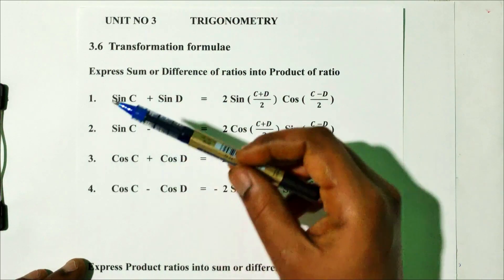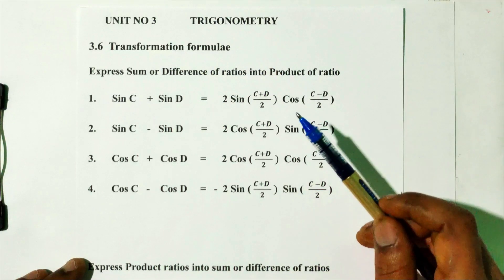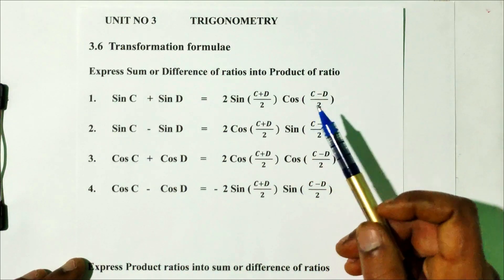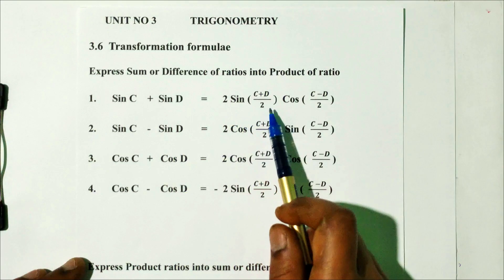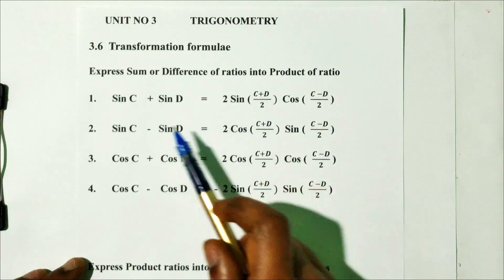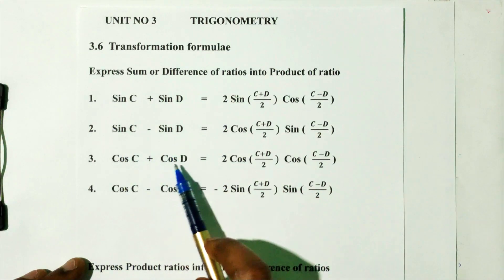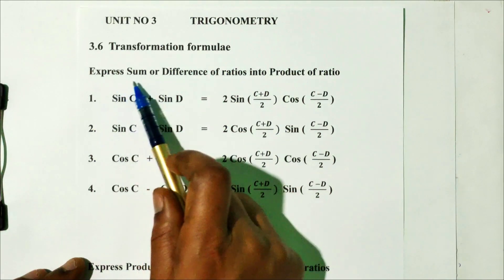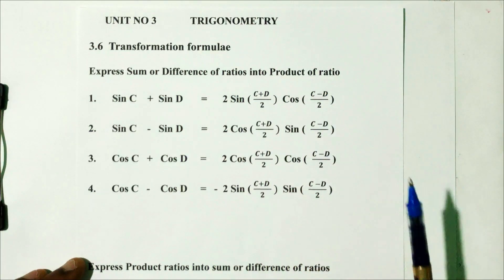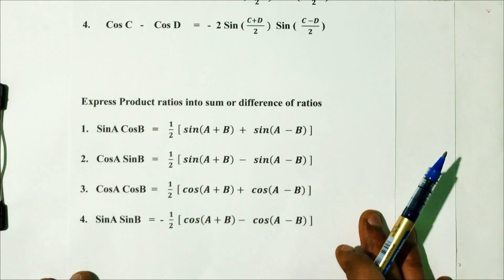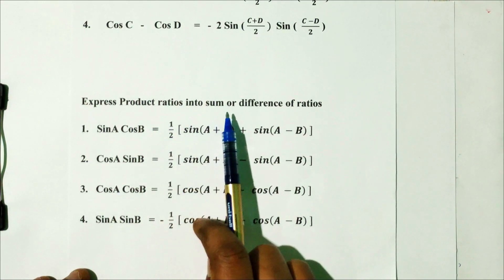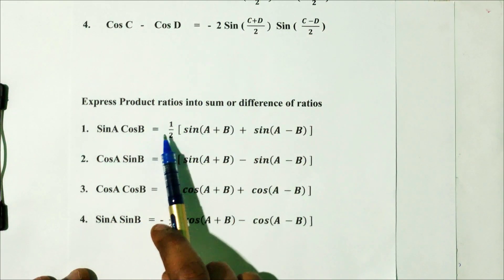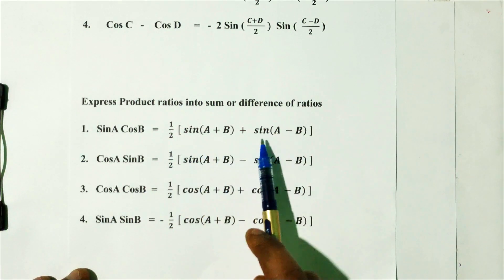Topic 3.6: Transformation formulas — expressing sum or difference of ratios as a product of ratios. sin C + sin D = 2 sin((C+D)/2) cos((C−D)/2). Similarly for sin C − sin D, cos C + cos D, and cos C − cos D. Also, expressing product ratios as sum or difference: sin A cos B = (1/2)[sin(A+B) + sin(A−B)].